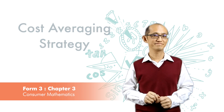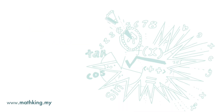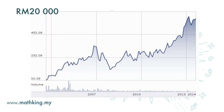Let's look at this graph. Let's say you have 20,000 ringgit to invest. If you happen to buy the shares at point A and sell them at point B, you will be very happy. On the other hand, if you buy the shares at point B and sell them at point C, you will be very unhappy. Everyone wants to buy at point A and sell at point B, but the fact is that it is very, very difficult to predict the movement of the share price.